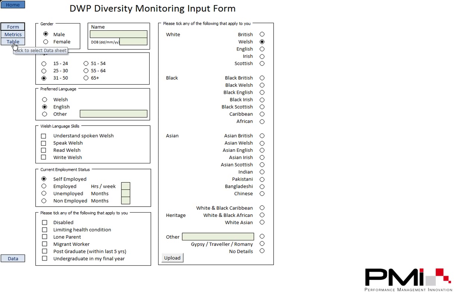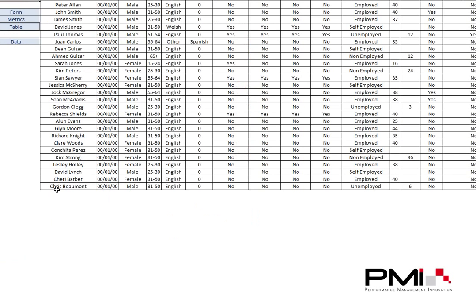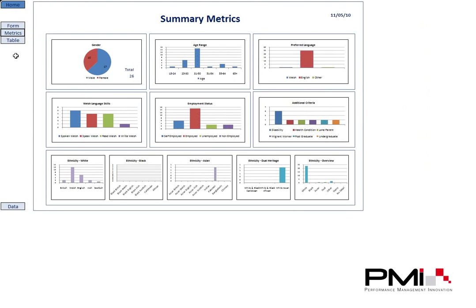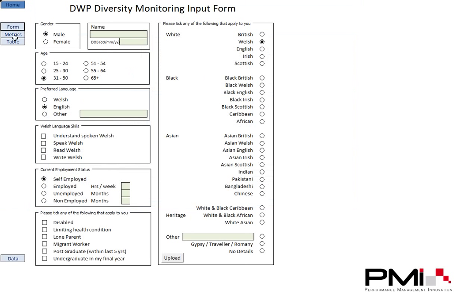If we take a look at the table, we can see the bottom entry is Chris Beaumont. Looking at the metrics, we can see we've got 26 people, 16 of which are male and 10 are female. So if I enter my details just as an example...